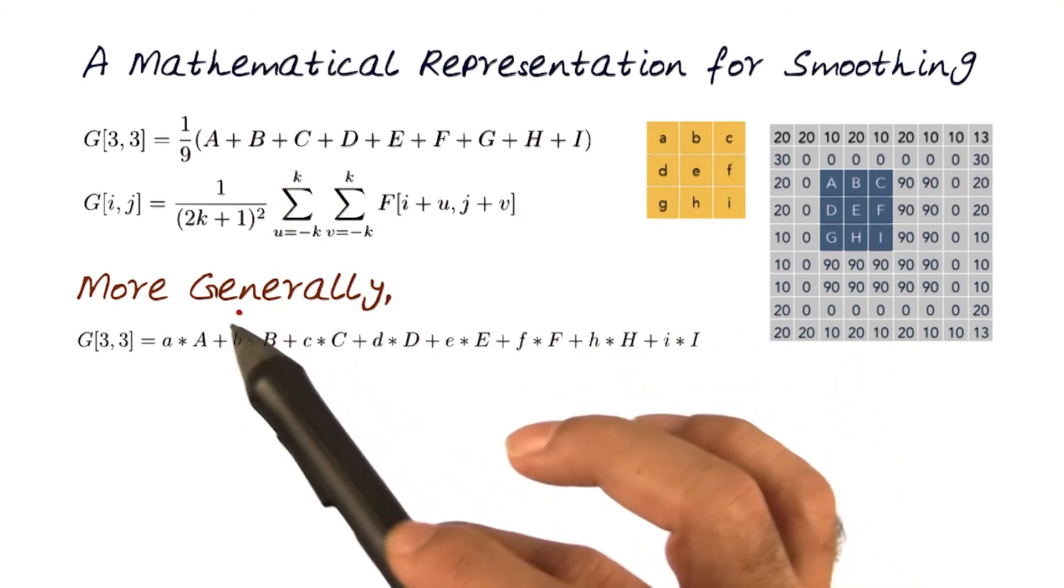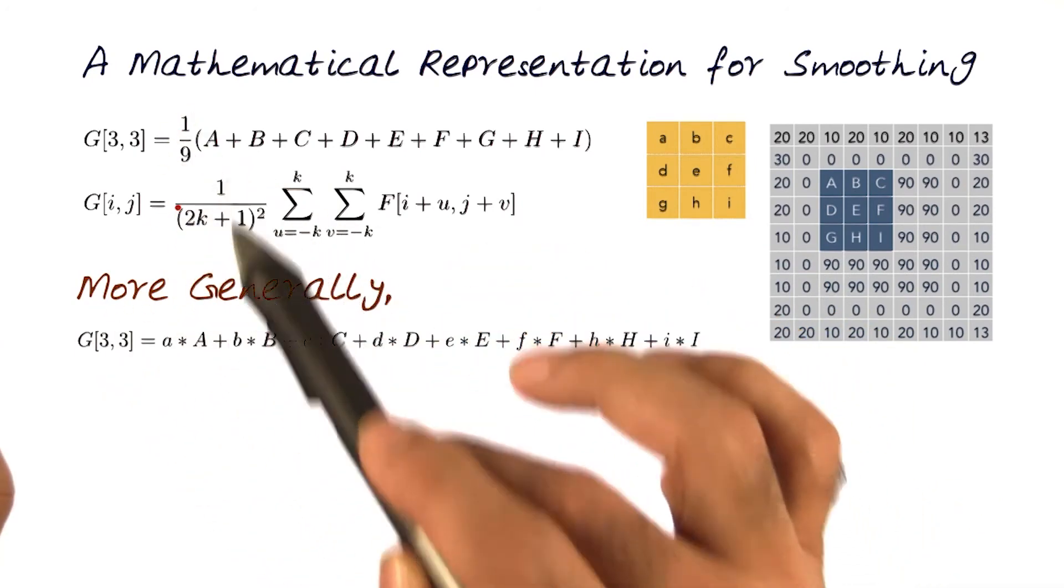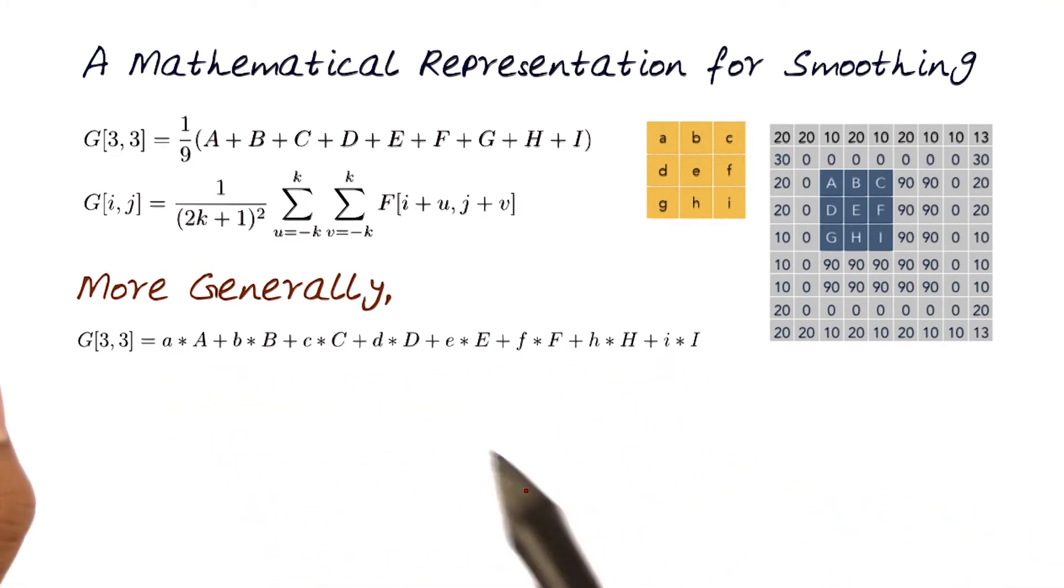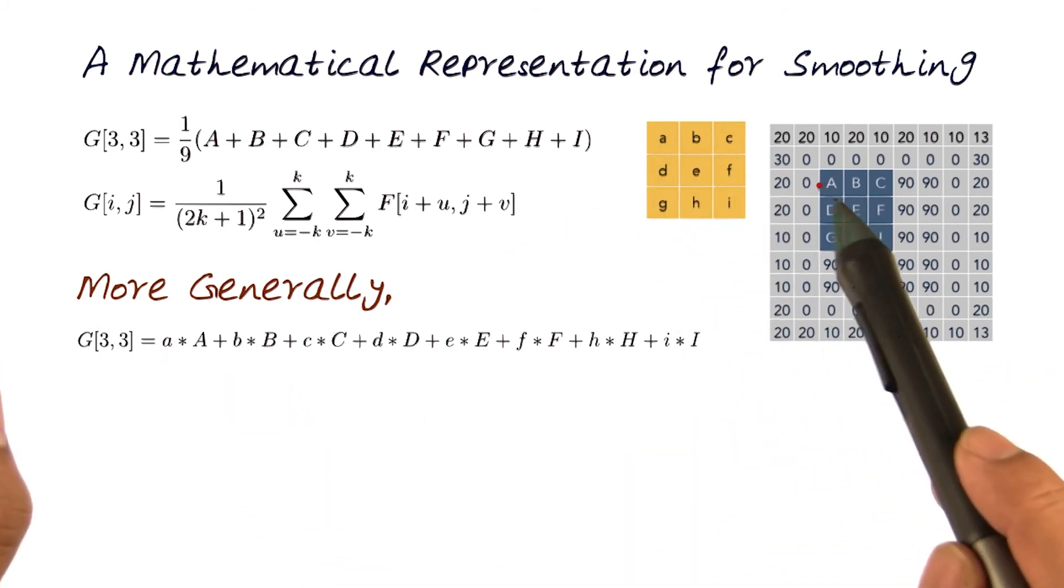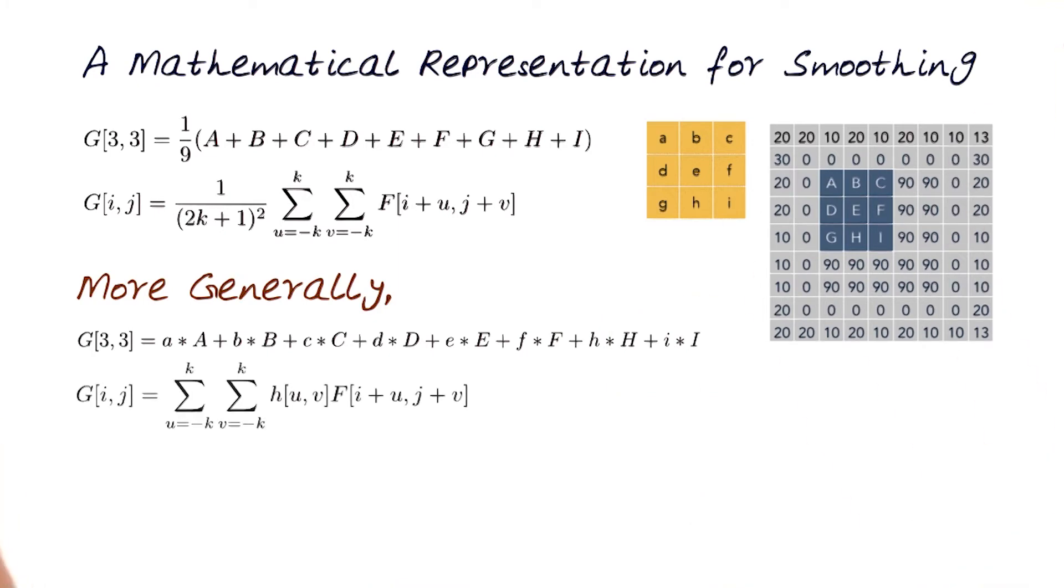The same equation, remember from last time, we want to have the more general form, where we're no longer doing the averaging, but a general form of the filter would be this equation, where we've taken the lowercase a and the uppercase a. Generalizing this, we get this formulation.